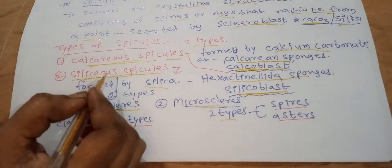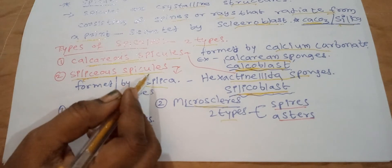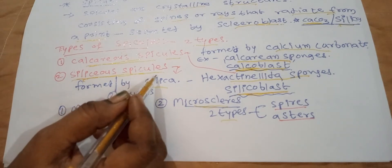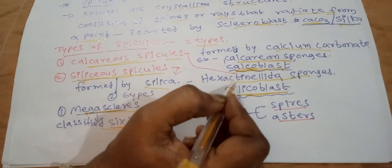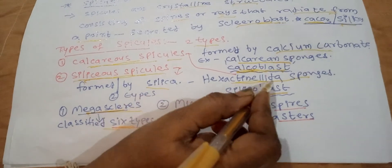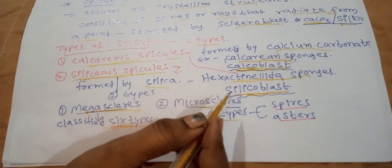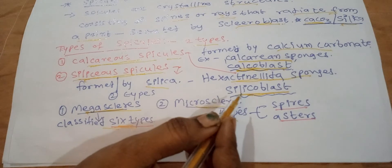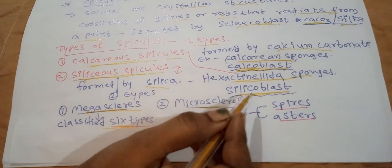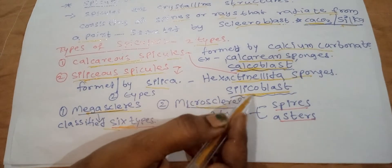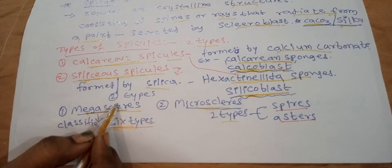Siliceous spicules are formed by silica. They are present in the class Hexactinellida. The scleroblast secreting siliceous spicules is called a silicoblast — very important.